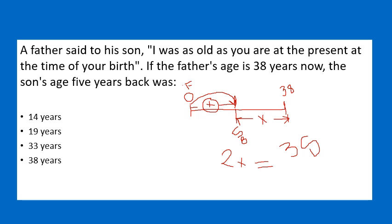We can have 3x and 1x. We can have 3x, but we can also have 2x, so we can have 3x. The son is 5 years back, which is the answer to this problem of age.